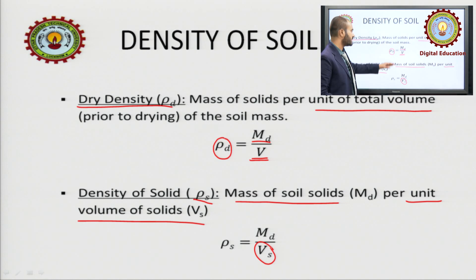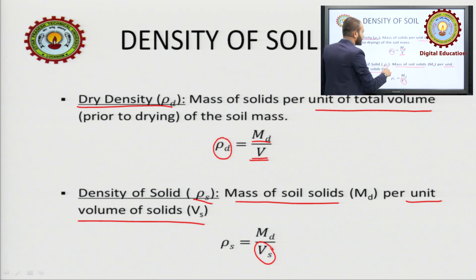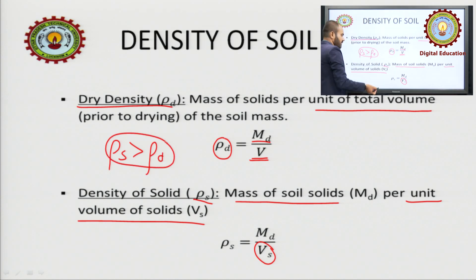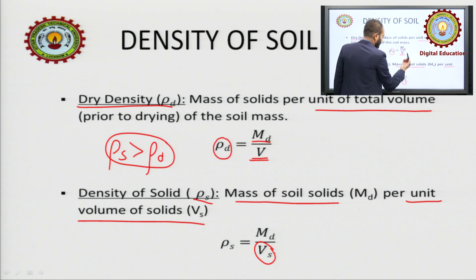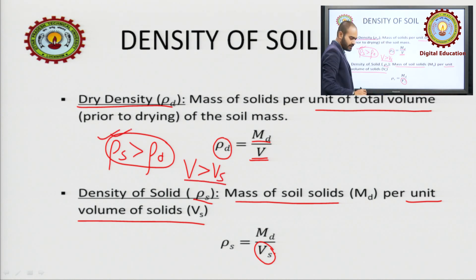From this we can understand that rho-s will be greater than rho-d, because Vs is smaller than the total volume V. This is an important relation.